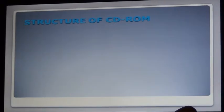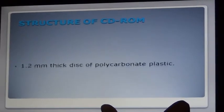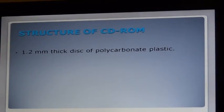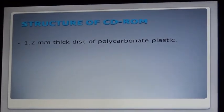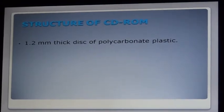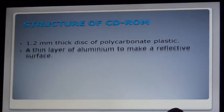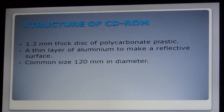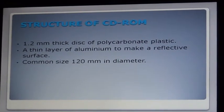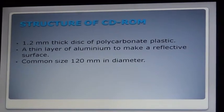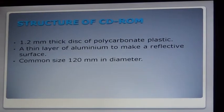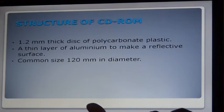Next, we move on to the structure of CD-ROM. Basically, a CD-ROM is a 1.2mm thick disc of polycarbonate plastic with a thin layer of aluminum reflective metal surface. The common size of a CD-ROM would be 120mm in diameter. There may be small CD-ROMs also with an 80mm diameter available.